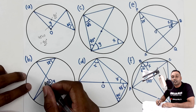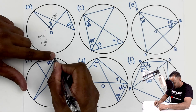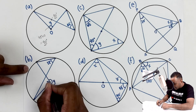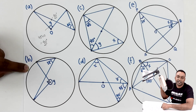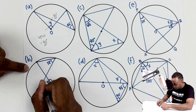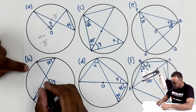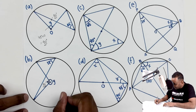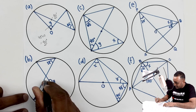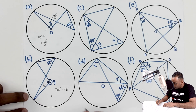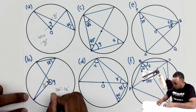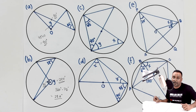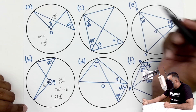Question B looks similar. We have 38 degrees starting from two points, and the angle ends at the center. The central angle is two times the circumference angle: 38 × 2 = 76 degrees. Since one full circle is 360 degrees, y = 360 − 76 = 284 degrees. So y = 284 degrees.